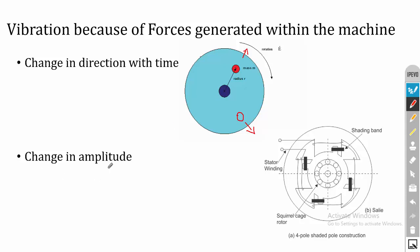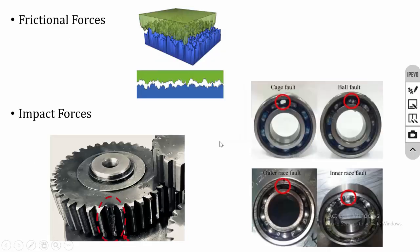The second internal force is change in amplitude. In the case of motors and generators, if the gap varies, then the amplitude will vary. If the amplitude varies, we will get a pulsating force. Because of the pulsating force, vibration is generated in the shaft. This is the second example of internal force.